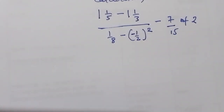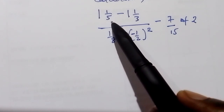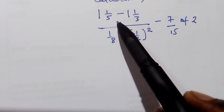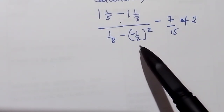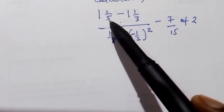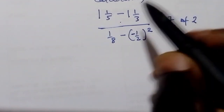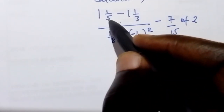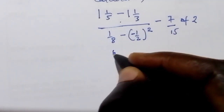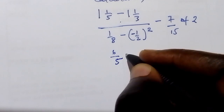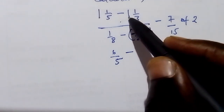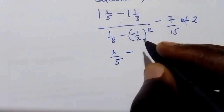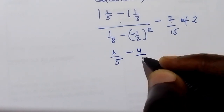So first of all, we want to find the LCM of the numerator. We make the numerator into improper fractions. So it becomes 1 times 5 is 5 plus 1 is 6, giving us 6 over 5, minus 3 times 1 is 3 plus 1 is 4, giving us 4 over 3.